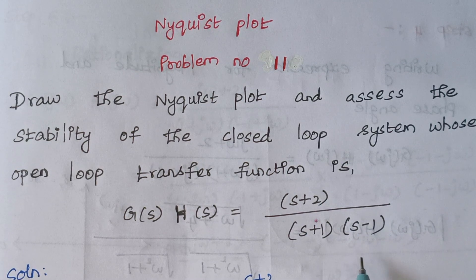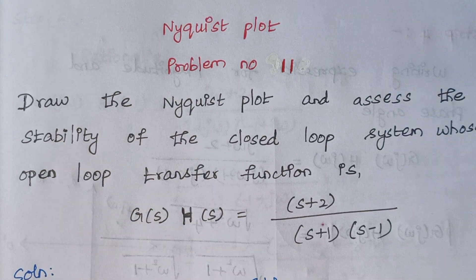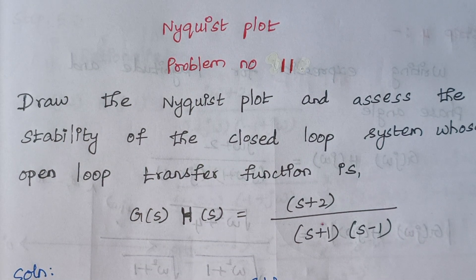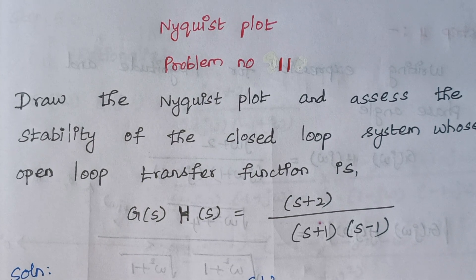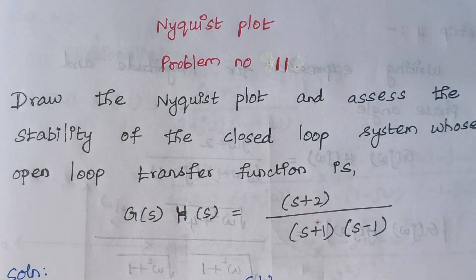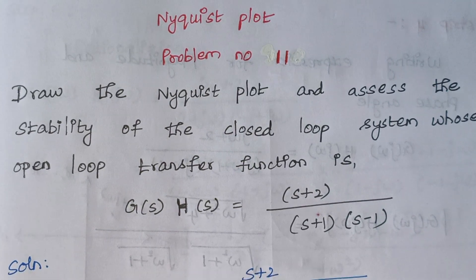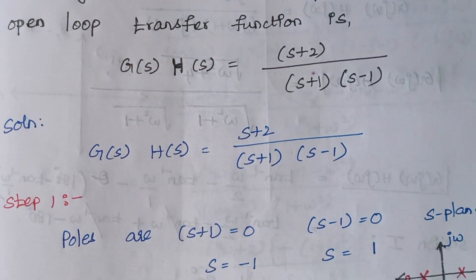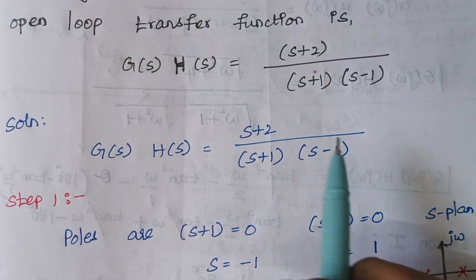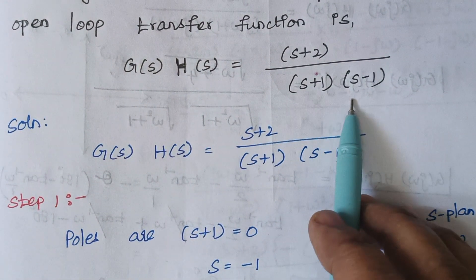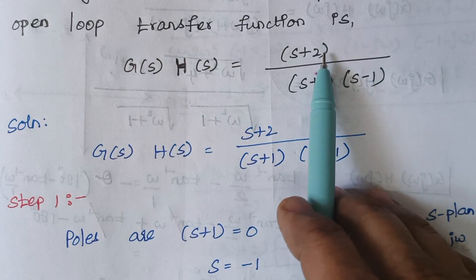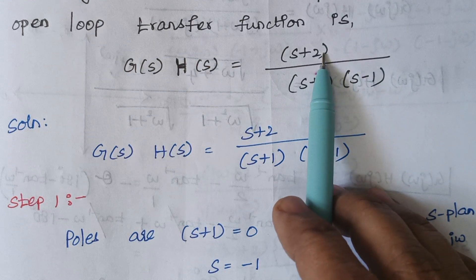Here the open loop transfer function is given to us. By using Nyquist criteria, we have to determine whether the closed loop system is stable or unstable. The first step is calculating the values of poles. The denominator terms are known as poles and the numerator terms are known as zeros.